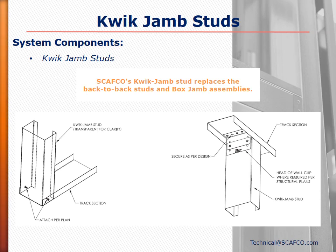As seen in the photos, the HDR header assembly creates no build-up in the wall width despite the saddle clip grabbing the sides of the header, since the HDR header width is slightly undersized to account for the clip and screw head thickness. The cripple studs attach to the top flange that sticks up above the HDR header, eliminating the labor needed to install an additional track section piece. The quick jam studs are designed to replace the typical boxed or back-to-back jam stud configurations.